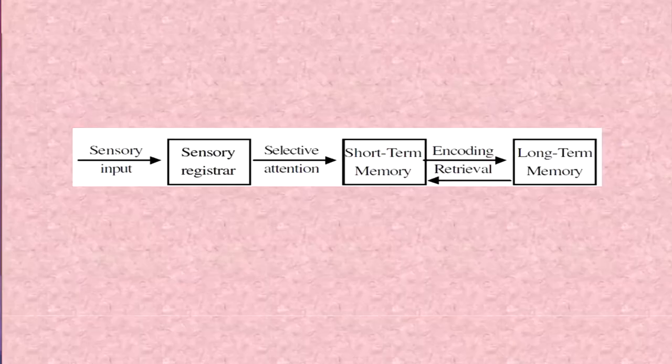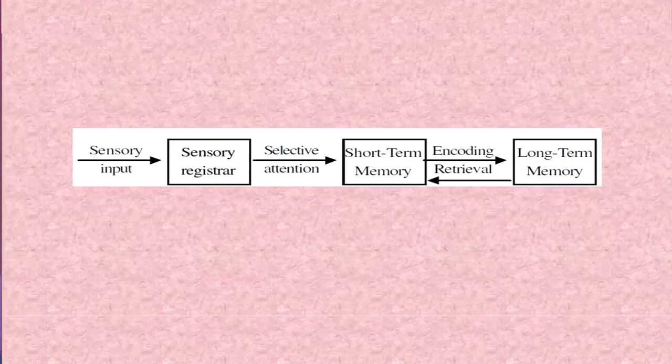Before I begin with today's discussion, let us review what we discussed in remembering and forgetting part 1. Memory is a dynamic process that makes information available to us for future use. In order for memory to take place, it goes through certain stages: sensory input, sensory register, short-term memory, and if we rehearse that information, it reaches long-term memory.